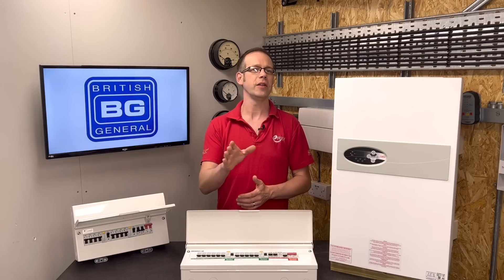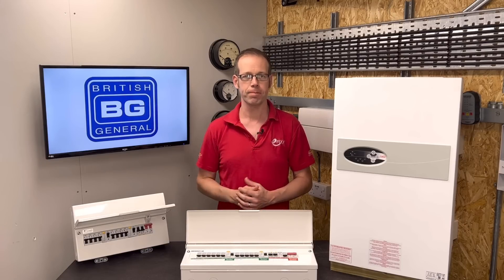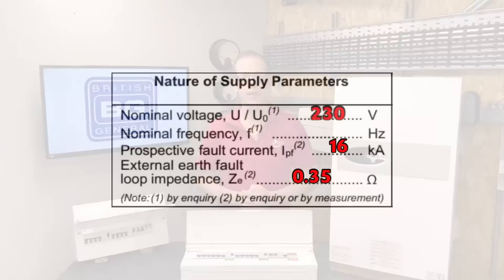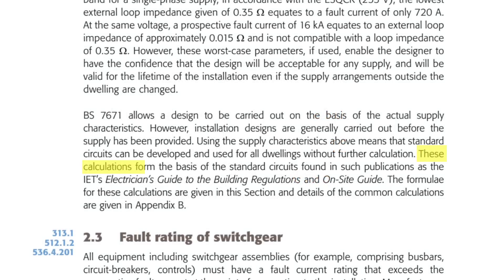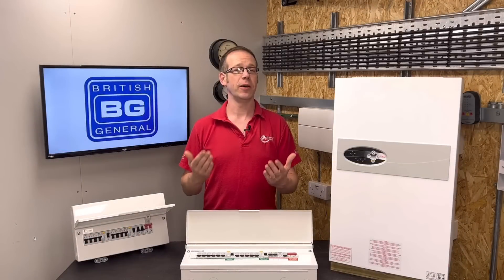Of course, it's best practice to make sure the protective equipment can handle the fault current without relying on the supply fuse, and it's unlikely we'll ever hit that 16 kA fault current in most domestic installations. If we assume these worst case scenario values for earth fault loop impedance and prospective fault current, we can be sure our circuits and switchgear will comply — and in fact it's these values the On-site Guide uses for its standard circuits, so there's a really good precedent for using them in our design.